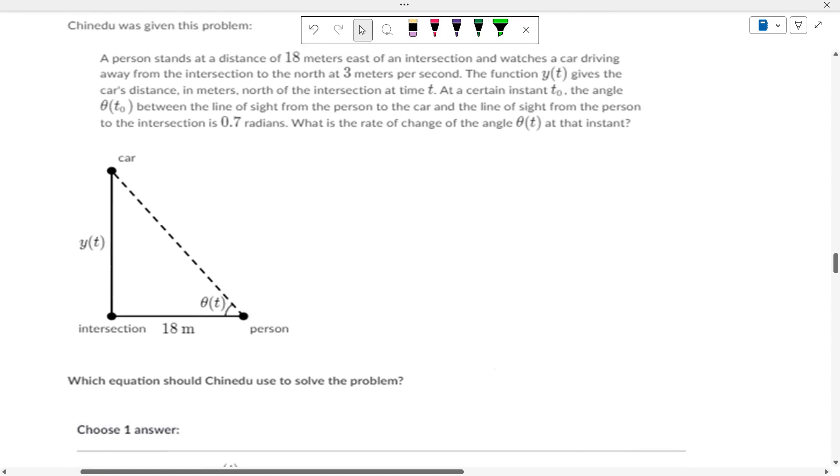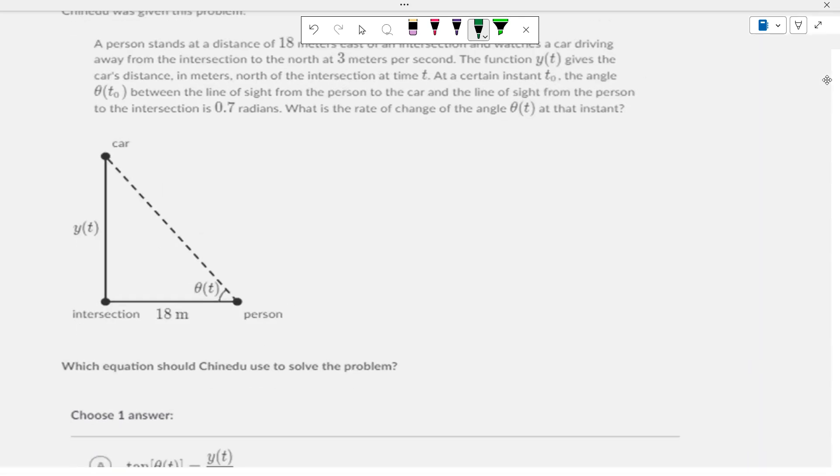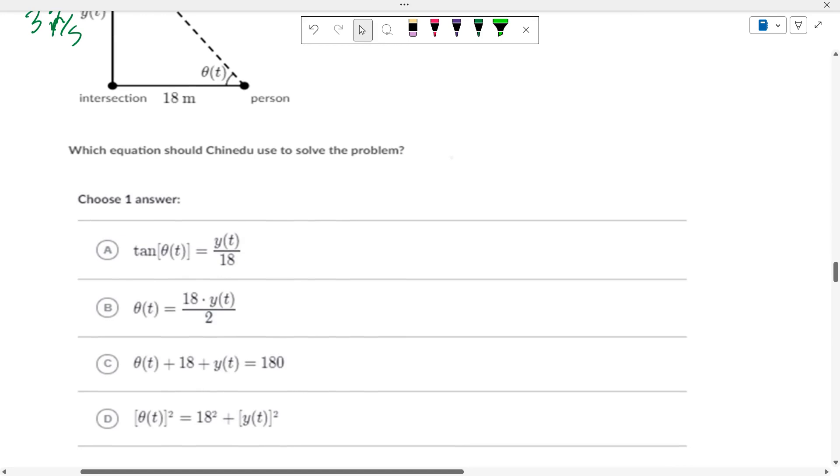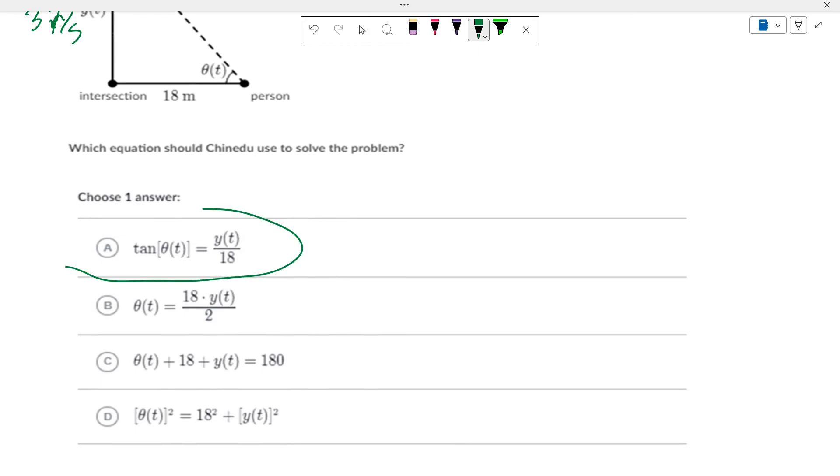For this one, a person stands 18 meters away, the car driving away from the intersection at 3. So, it's going this way at 3 meters per second. And then, the sight line. So, we're talking about angles.